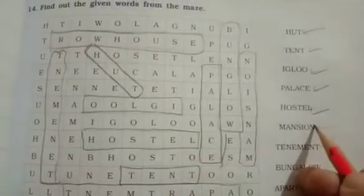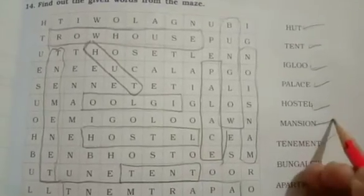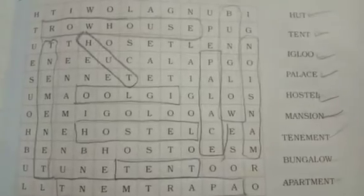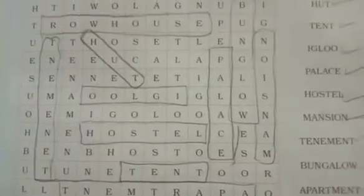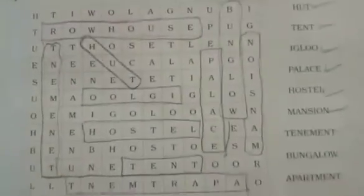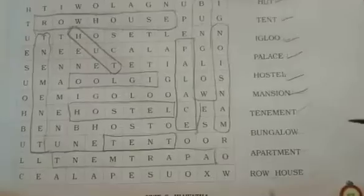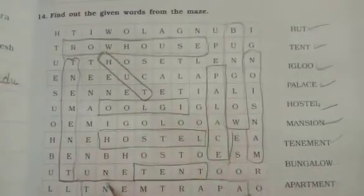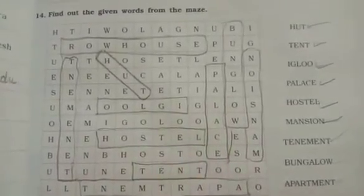Then mansion — M-A-N-S-I-O-N. In the same way, you have to find all these words from the maze given here.